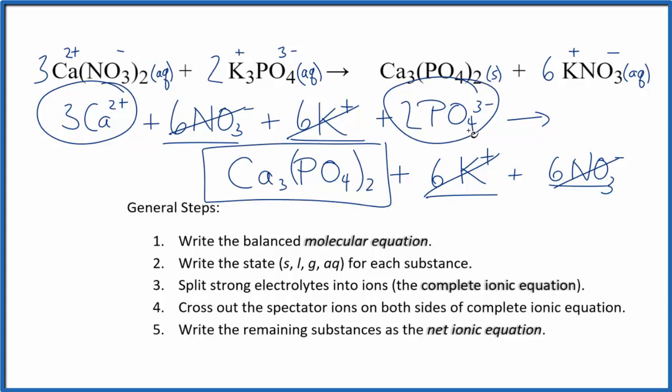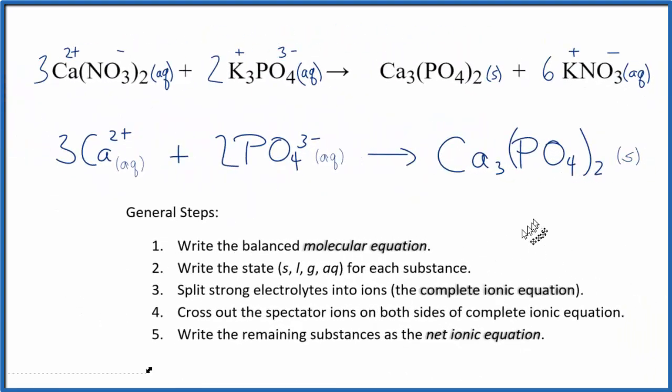Let me clean this up and we'll come back with a nicely formatted net ionic equation for calcium nitrate plus potassium phosphate. So this is the net ionic equation for Ca(NO3)2 plus K3PO4.